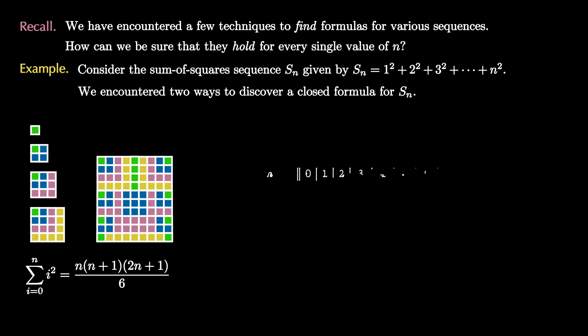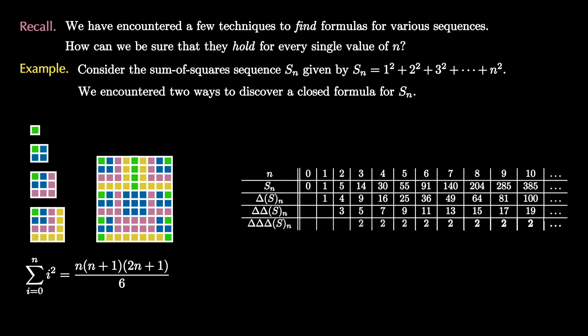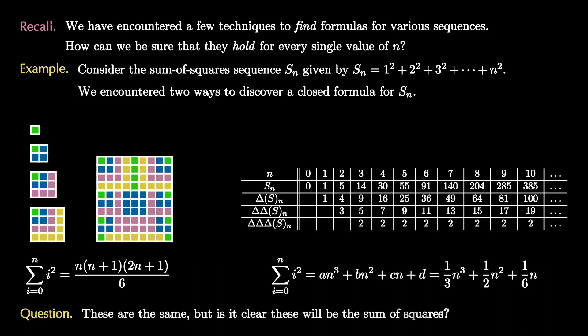The second technique was to use the sequences of differences. We filled in a table to notice that the sequence of third differences is constant, so the sum of squares is a degree 3 polynomial. We then used polynomial fitting to find the coefficients, giving us 1/3 n cubed plus 1/2 n squared plus 1/6 n. These are both the same formula, but is it clear that these formulas will always give the correct value for the sum of squares?